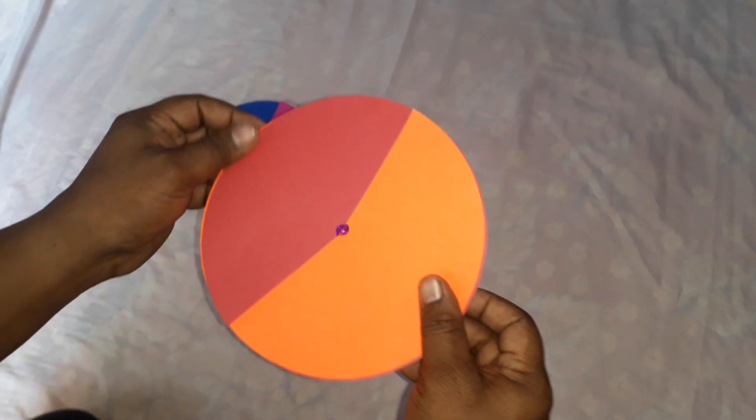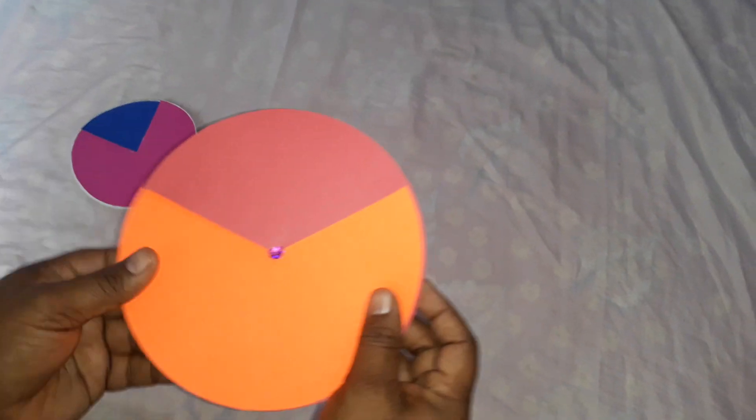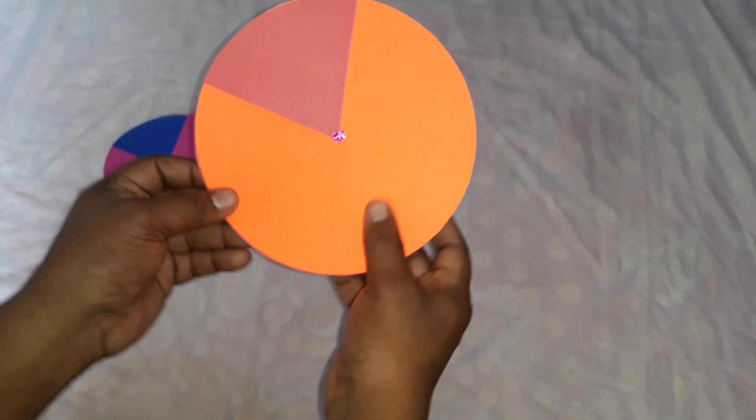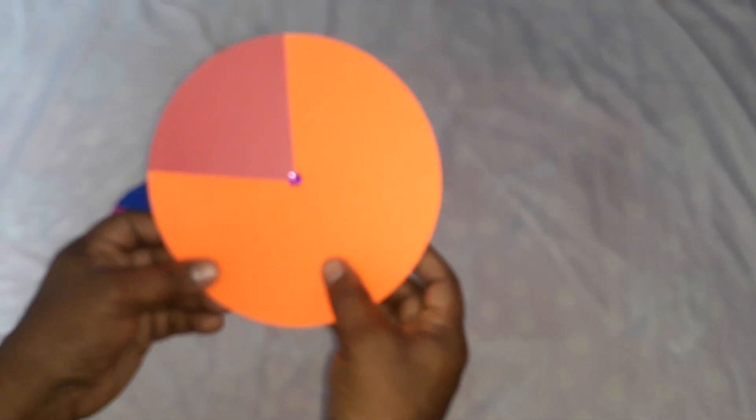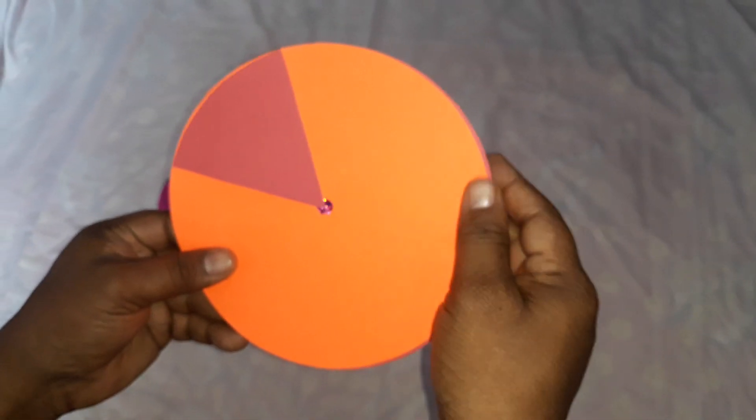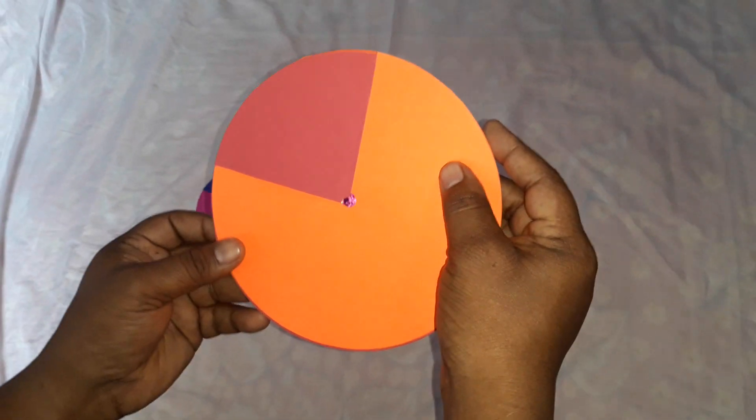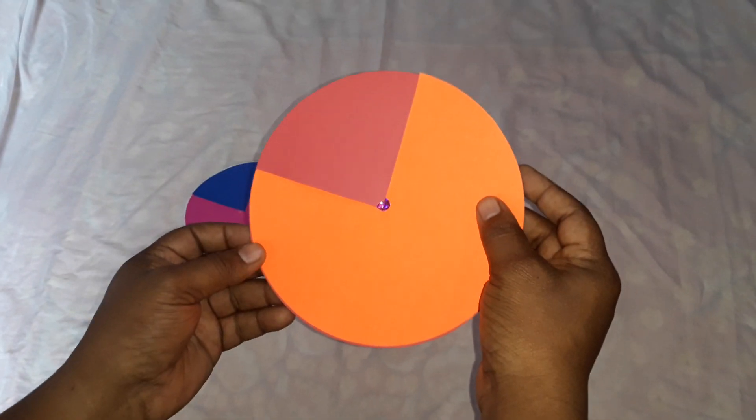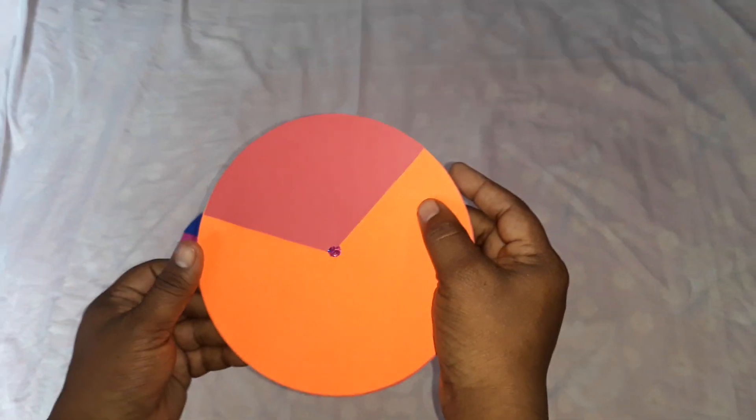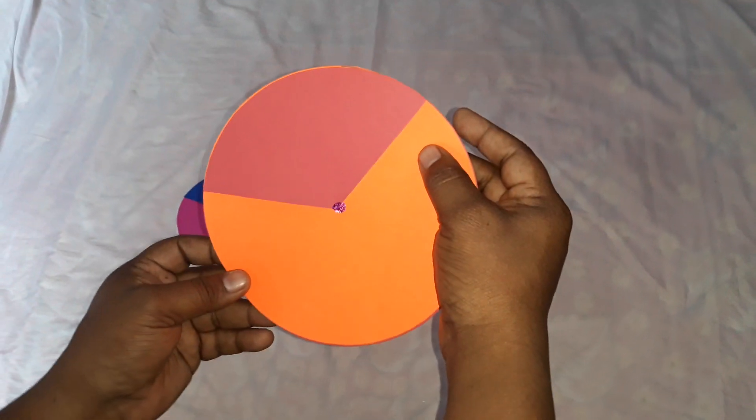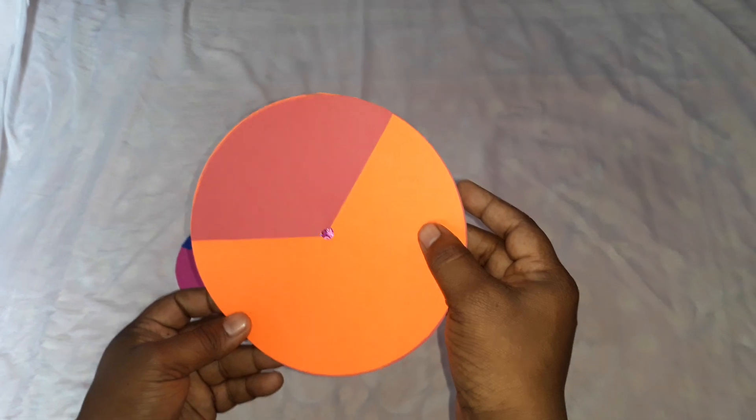I can explain type of angles also using this simple TLM. See, this is acute angle and if I rotate the circle like this, this is a right angle which is equal to 90 degrees. If I move further, we will get an obtuse angle.